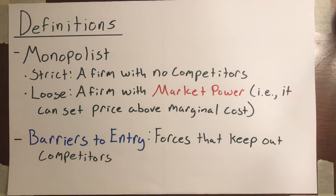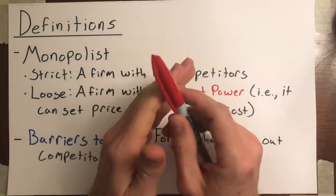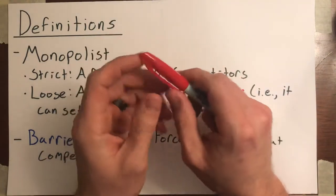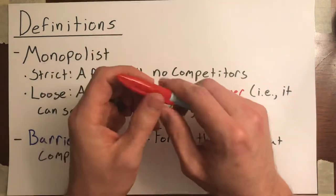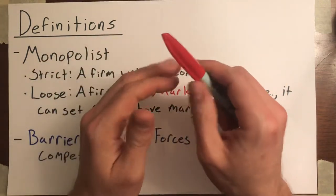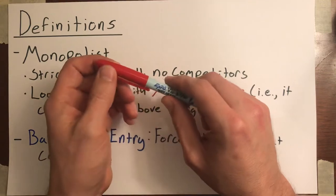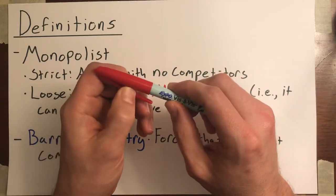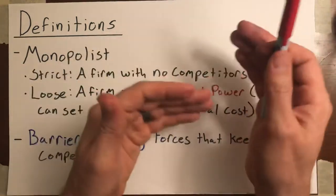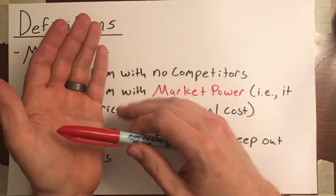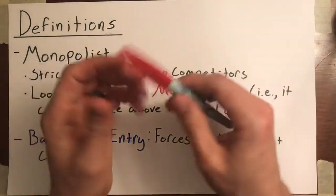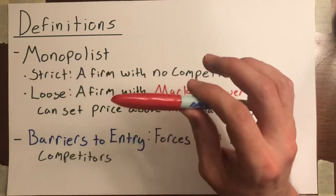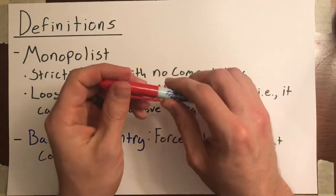Econ 200, let's talk about monopoly. Monopoly is the opposite end of the spectrum from perfectly competitive markets. In a perfectly competitive market, you have lots and lots of firms, lots of buyers, lots of sellers, so everybody has to just accept the market price. In the case of monopoly, it's going to be the opposite of that.